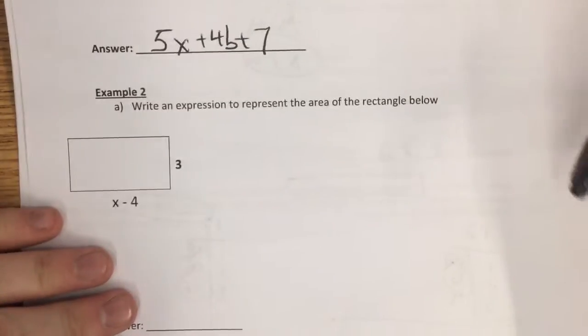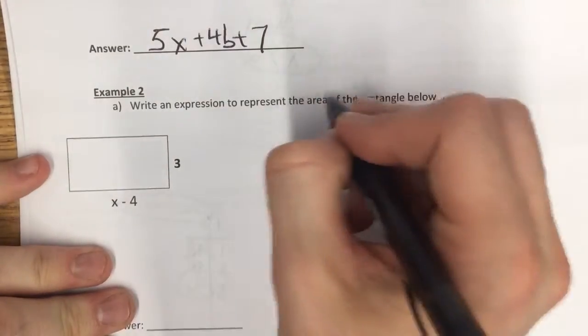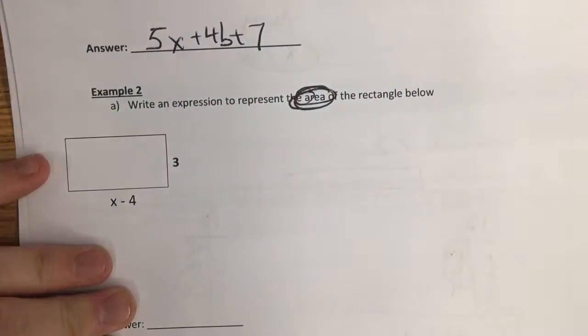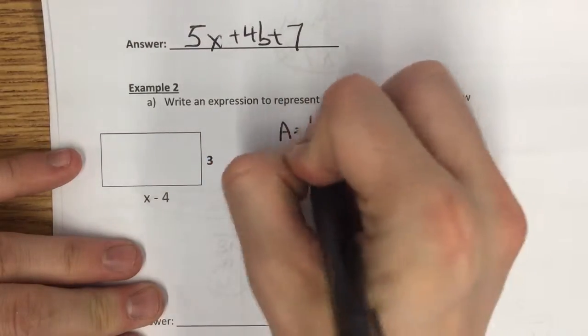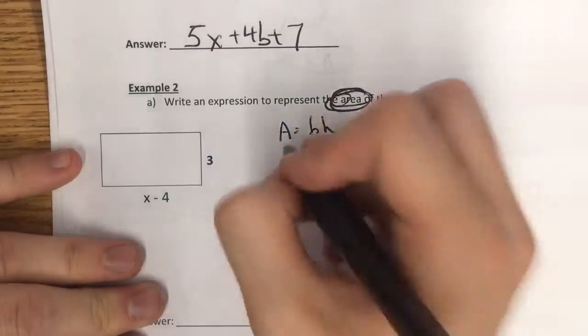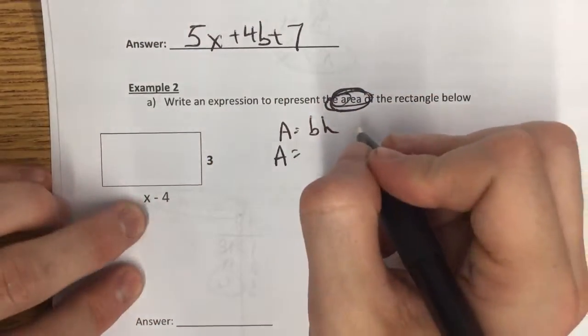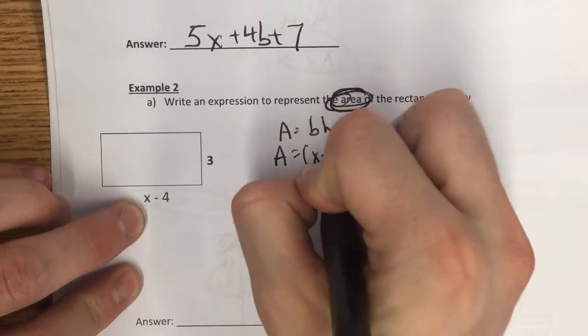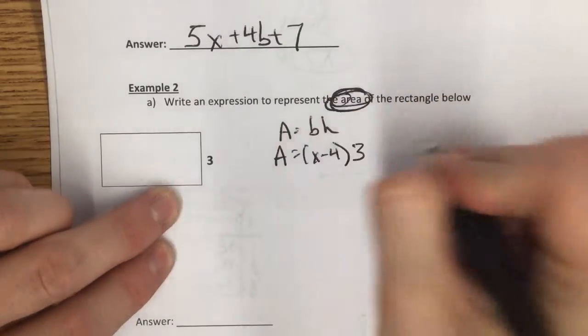Last example. Example 2. Write an expression to represent the area of the rectangle below. Well, I know area of a rectangle is base times height. So let's do that. Area is base. Here I have x minus 4 times my height, which is 3.